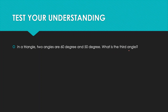Problem: In a triangle, two angles are 60 degrees and 50 degrees — what is the third angle? We know the sum of angles is 180 degrees. So if the third angle is c, then c plus 60 plus 50 equals 180 degrees. Solving this, 60 plus 50 is 110, and 180 minus 110 gives us c.